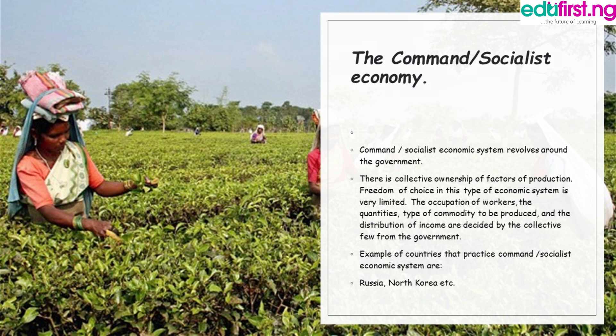Another type of economic system is the command or socialist economic system. The socialist economic system revolves around collective government ownership of the factors of production — that is, land, labor, capital, and human resources. Freedom of choice in this type of economy is very limited. The occupation of workers, the quantities and types of commodities to produce, and the distribution of income are decided by the collective government. Examples of countries that practice command or socialist economies include Russia and North Korea, among others.